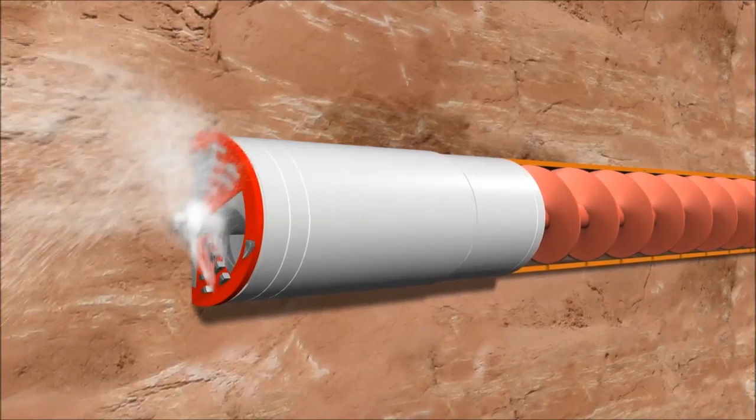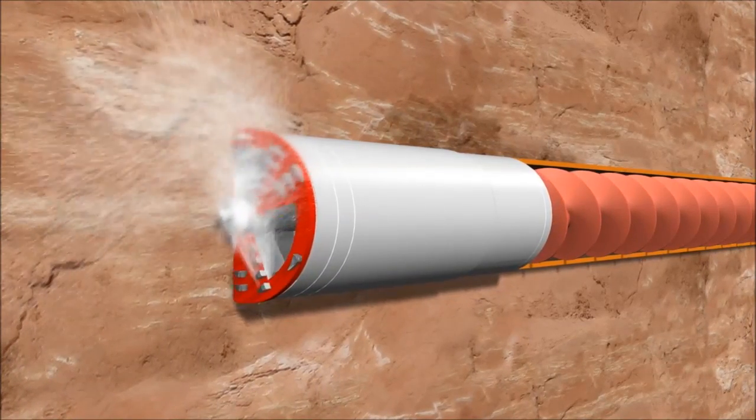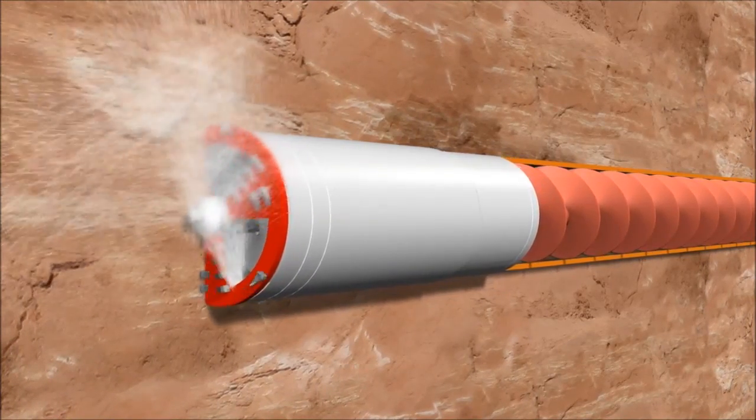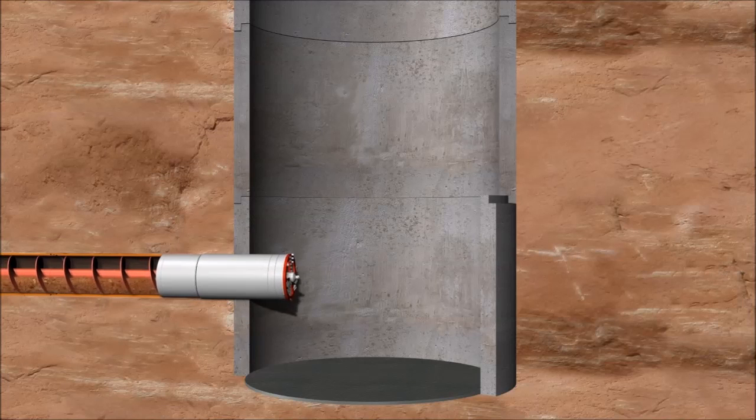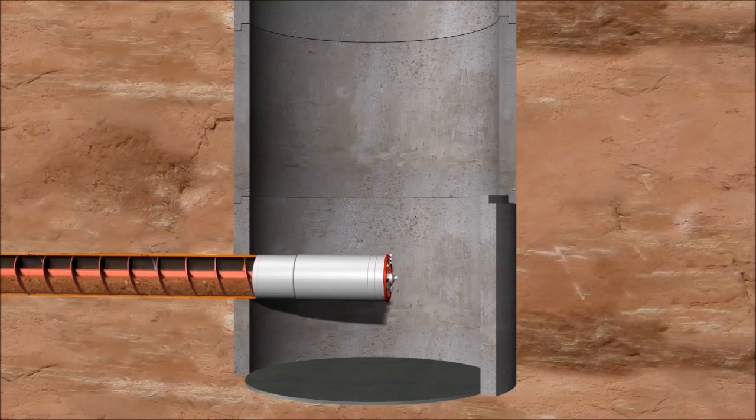If necessary, it's possible to activate a high-pressure water flushing system behind the cutting wheel. After arriving on target at the reception shaft, the front steer is disconnected and lifted out of the shaft.